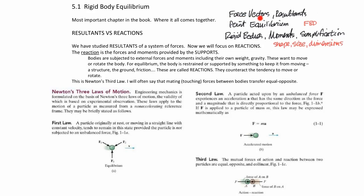In Chapter 2, we talked about force vectors, and then we concluded with resultants. We did some dot products in terms of finding components and angles between those vectors. In Chapter 3, we talked about point equilibrium, where you were introduced to the free body diagram — an extremely important tool and skill. Then in Chapter 4, we talked about rigid bodies and moments, and we concluded with simplification techniques.